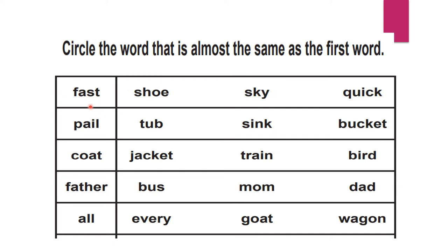See here children — for 'fast,' we are not going to say the opposite; we will say the exact or almost the same meaning. Fast — will 'shoe' come? No. 'Sky'? No. 'Quick'? Yes! Fast and quick are similar. So we will circle the word 'quick,' and we will give a hyphen to indicate meaning — fast means quick.